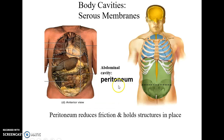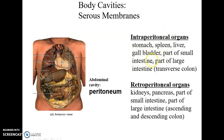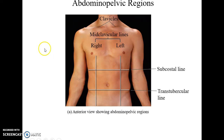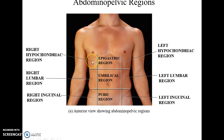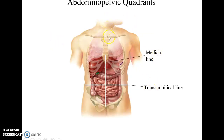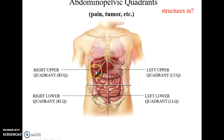The peritoneum is another serous membrane found in the abdominal cavity that reduces friction and holds structures in place. Organs that are mostly surrounded by the peritoneum are called intraperitoneal; those that touch but are not surrounded by it are retroperitoneal. The abdominal pelvic region can be divided into nine regions using two vertical and two horizontal lines: right hypochondriac, epigastric, left hypochondriac, right lumbar, umbilical, left lumbar, right inguinal, pubic, and left inguinal regions. It can also be divided into four quadrants — right upper, left upper, right lower, and left lower — using two perpendicular lines through the navel.